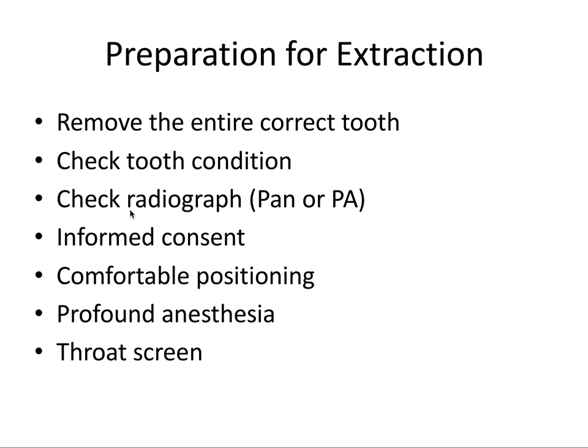Check the radiograph. Radiographs are a must. You absolutely need to have a panoramic for third molars and a PA for every tooth you're taking out. It must clearly show the root shape, the root apices, and the surrounding structures. You want to check the proximity of the inferior alveolar nerve in the mandibular and the proximity of the sinus for the maxillary teeth. And this is just because of those complications we talked about in the first video.